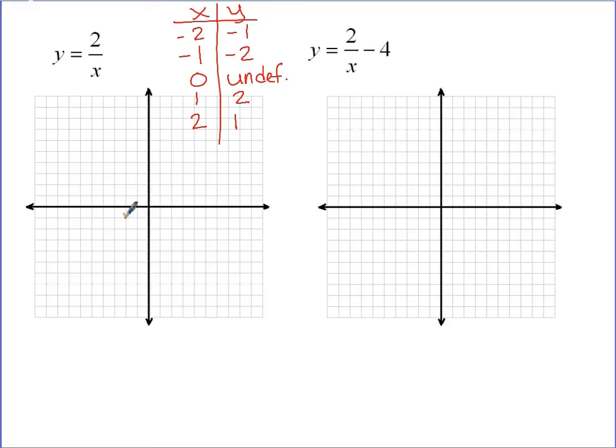Negative 2, negative 1. Negative 1, negative 2. 0 undefined. So this is where my vertical asymptote is. The next one is at the point 1, 2. And the point 2, 1. And the same kind of thing is going to happen. It's just stretched out a little bit. So this graph is going to look like something like this.